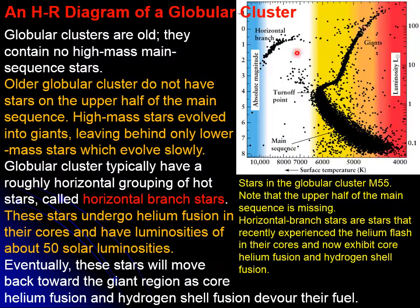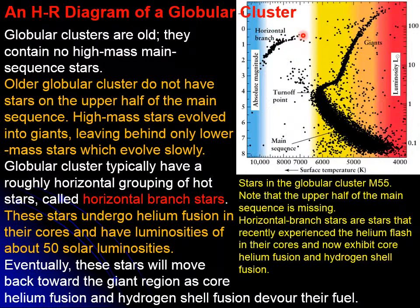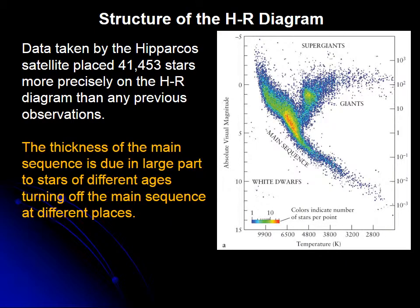The cluster I described is Messier 55, with the upper main sequence missing and the horizontal branch showing. These are the stars that experienced the helium flash and are now undergoing helium fusion and hydrogen shell fusion. This is a superposition of 41,453 stars taken by the satellite Hipparcos.